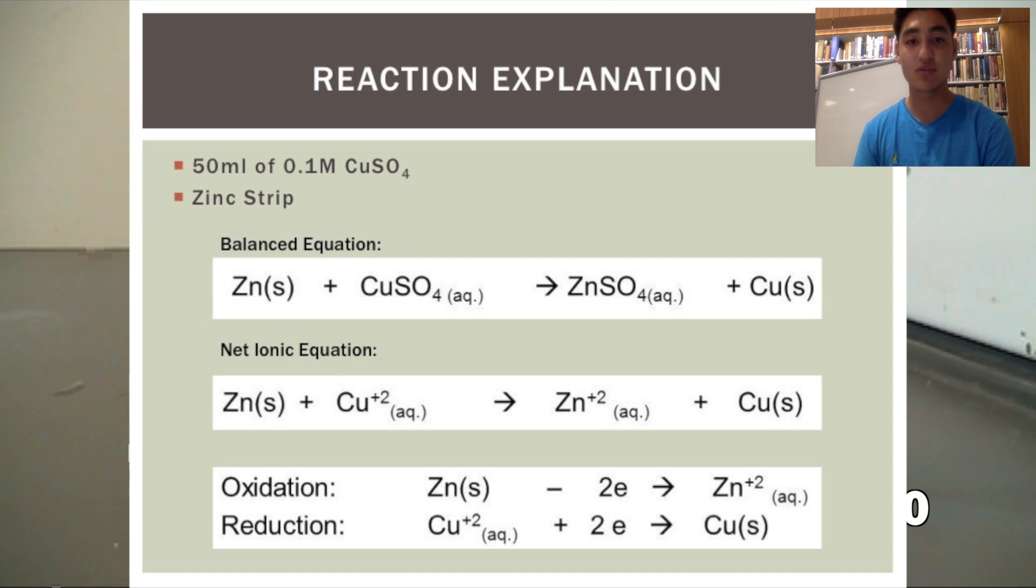Oxidizing agents reduce or gain electrons, where reducing agents oxidize or lose electrons. Generally when metals are fully reduced, they form elemental metal and plate the site where they're reduced.